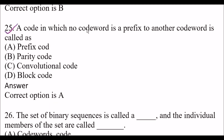Next question: A code in which no codeword is a prefix to another codeword is called — Option A: prefix code. Option B: parity code. Option C: convolutional code. Option D: block code. The right answer is option A, prefix code. A code in which no codeword is a prefix to another codeword is called a prefix code.